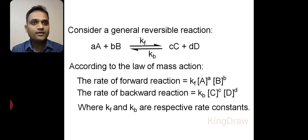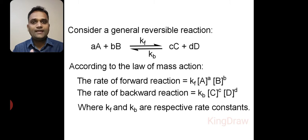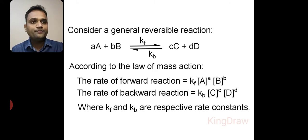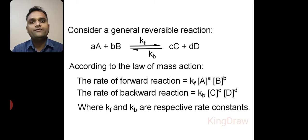Consider a general reversible reaction: A plus B gives us products C plus D, where small a and small b are the coefficients of capital A and capital B, and they represent the number of molecules of reactant A and B. While small c and small d are the coefficients of products C and D and represent the number of molecules of C and D. We know this well because we have studied it in the law of mass action.